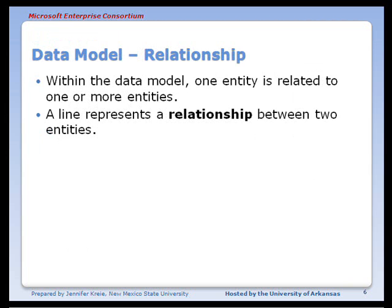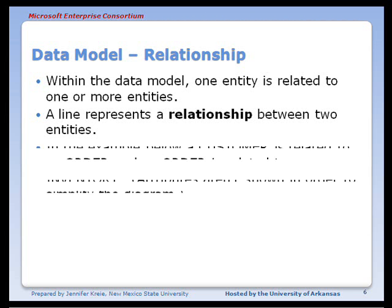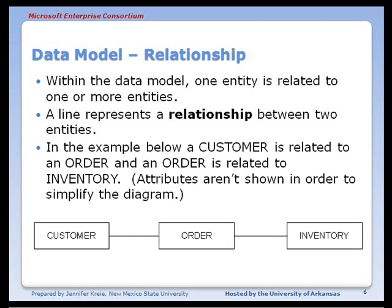The next symbol and term is the relationship. A relationship makes a connection between entities and is represented by a line. In this example, a customer is related to order, and order is related to inventory.